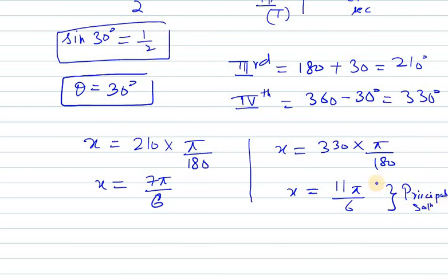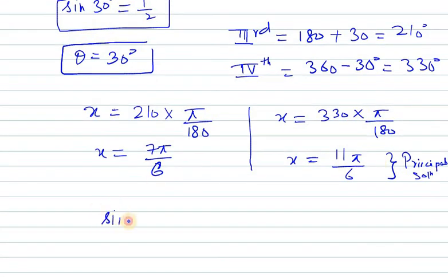Now we need to find the general solution. For finding general solution we need to assume that sin x equals sin y. And we know that sin x is minus half.